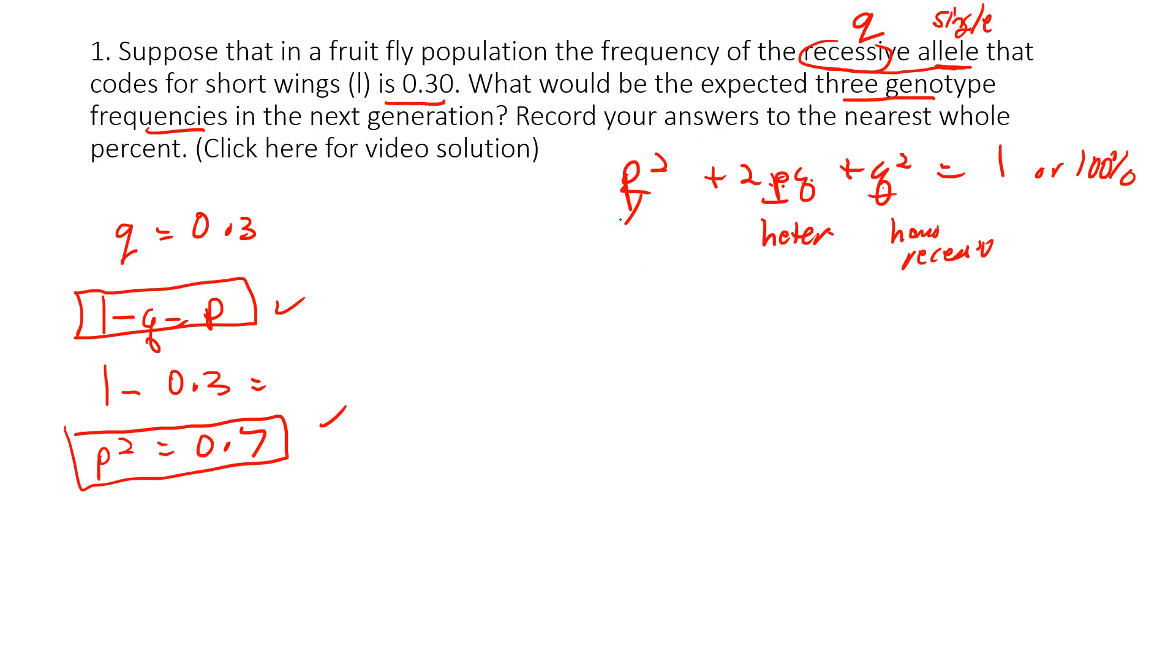Very easy now. This is the homozygous dominant, and we know it's homozygous dominant because P represents the dominant allele. When there's two of them, that's the genotype. We have 0.7 times 0.7, which gives us 0.49. They want the answer in percentage, so we multiply by 100 and get 49 percent.